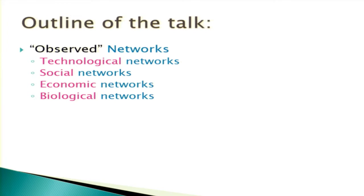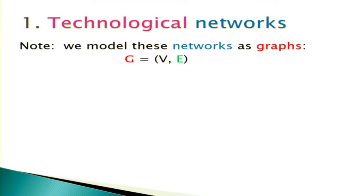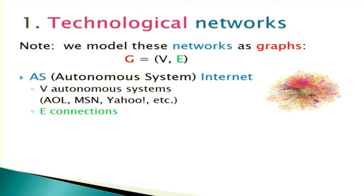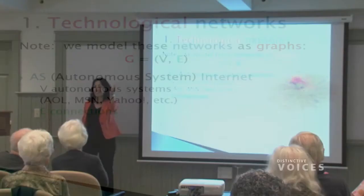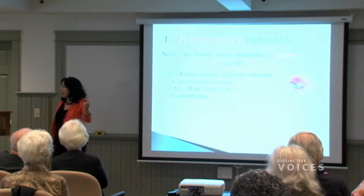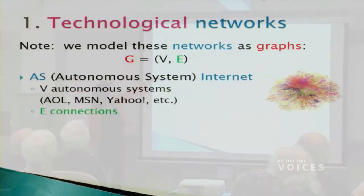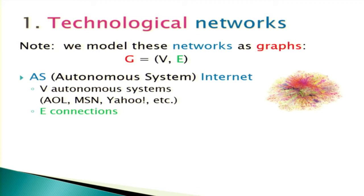I look at technological networks, social networks — which can be technological social networks like Facebook — economic networks, and biological networks. I am a mathematician, so I view these networks as graphs: they have vertices and edges. On the Internet, an autonomous system is something like AOL, Harvard.edu, or NASA. The vertices are those systems, and the connections are the edges among those networks.